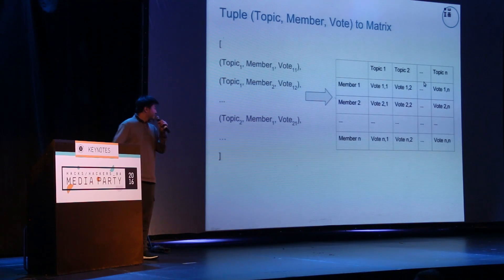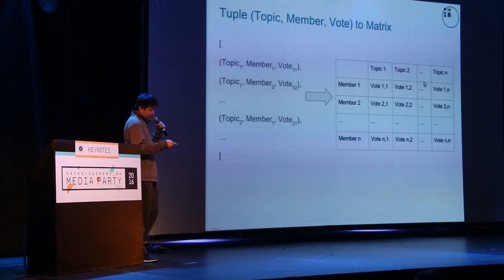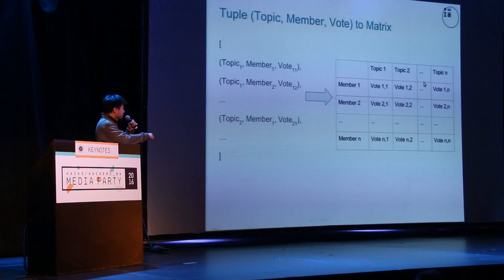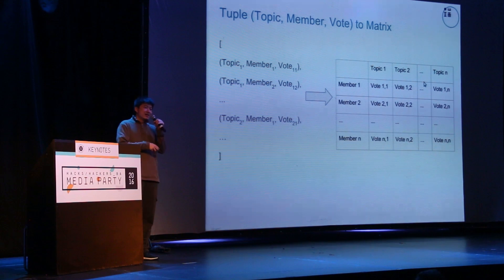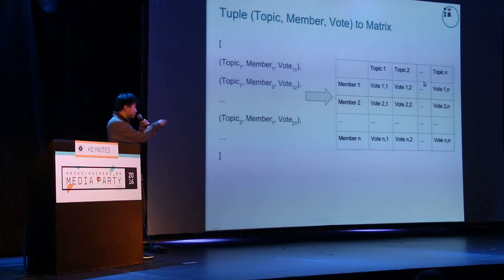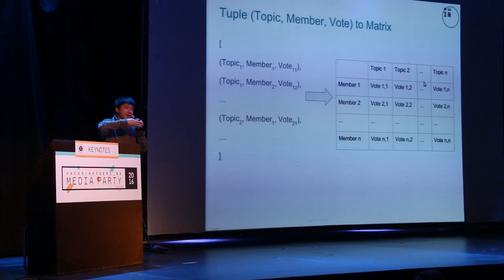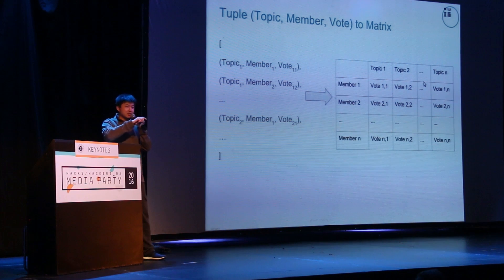So here comes the main course. Originally we have the voting records as tuples, and you can reorganize them into a tabular format — some of you already know pivot table, which is useful for this case. For each row it represents a member, for each column it represents a topic, and for each cell it represents how this member votes for this topic. This is our starting point.